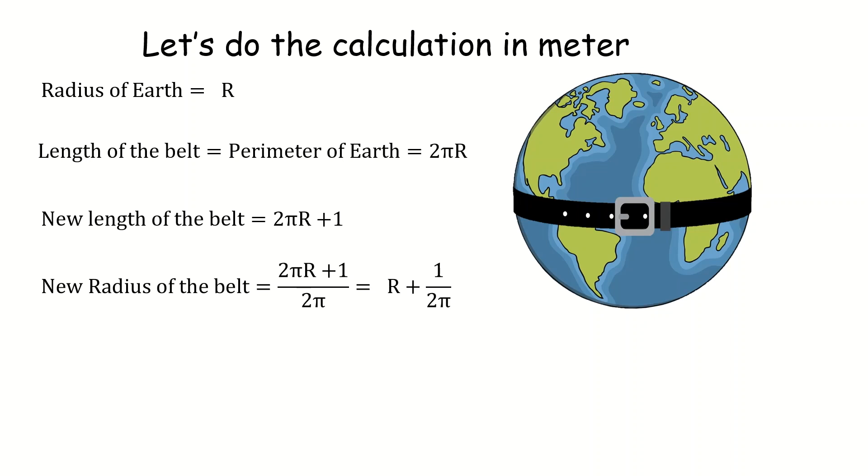Now if you want to find the gap between the surface of the Earth and the belt you need to find the difference between the old radius and the new radius of the belt and that is 1 over 2π.